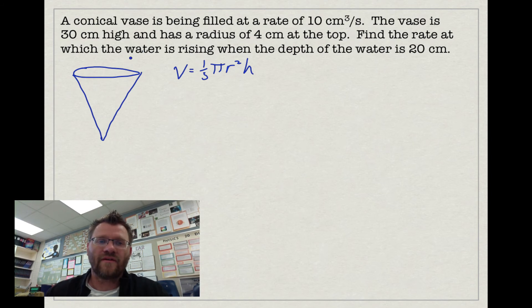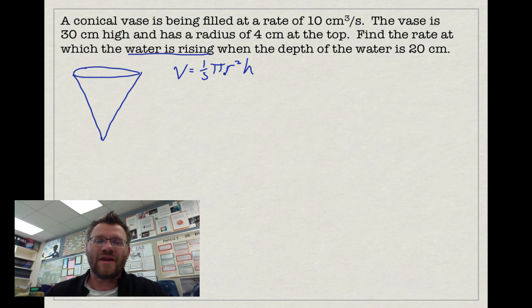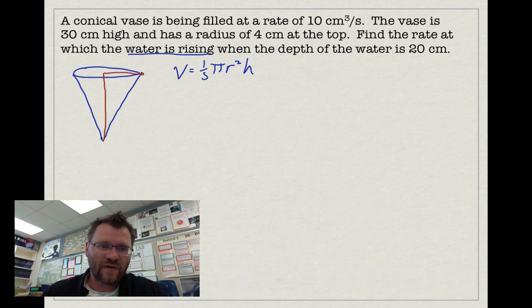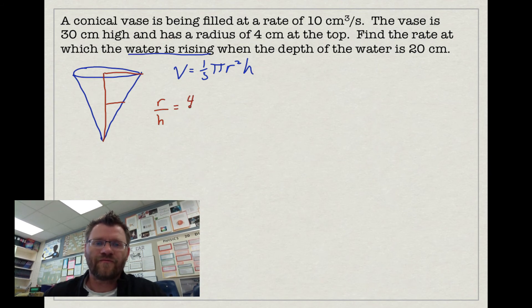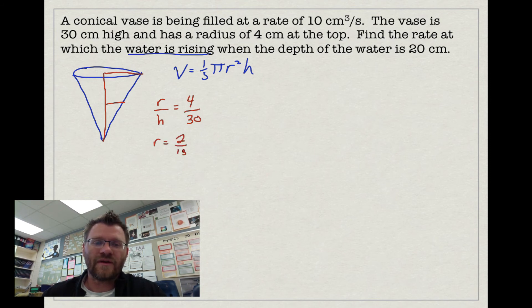If we differentiate the volume formula now, we'd need to use the product rule and get a dr over dt term, which we don't know. So we make a substitution to eliminate r and replace it with h. Since all cross-sectional triangles are similar, we can write the ratio: radius over height equals 4 over 30. Solving for r gives r equals 2 over 15 times h. Substituting into the volume formula: V equals one-third π times (2/15 h) squared times h.